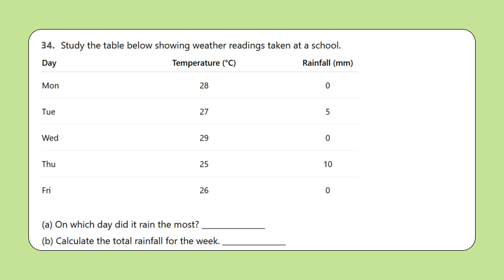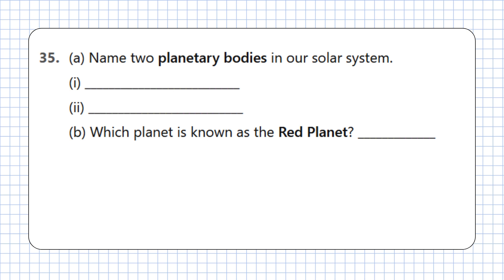Question 34: Study the table below showing weather readings taken at a school. Day, temperature in degrees Celsius, rainfall in millimeters: Monday 28, 0; Tuesday 27, 5; Wednesday 29, 0; Thursday 25, 10; Friday 26, 0. A. On which day did it rain the most? B. Calculate the total rainfall for the week. Question 35: A. Name two planetary bodies in our solar system. B. Which planet is known as the Red Planet?